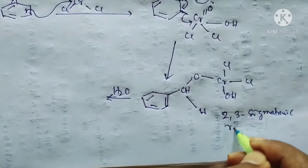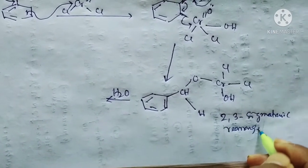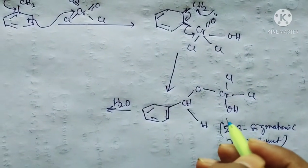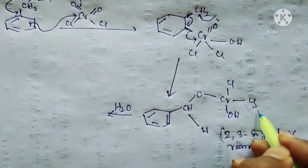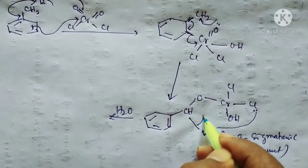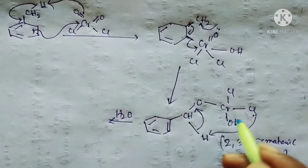Two-three sigmatropic rearrangement. That means whenever this chlorine takes up this hydrogen to form HCl, and this hydrogen gives this bond over here, and this bond gets out of the system.